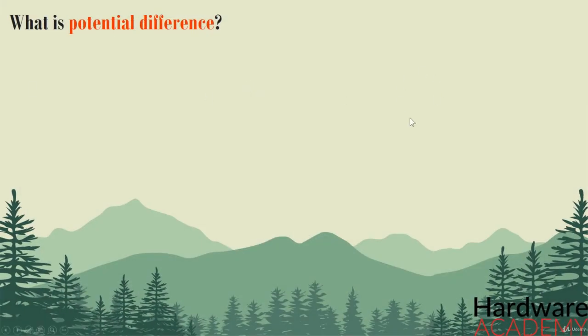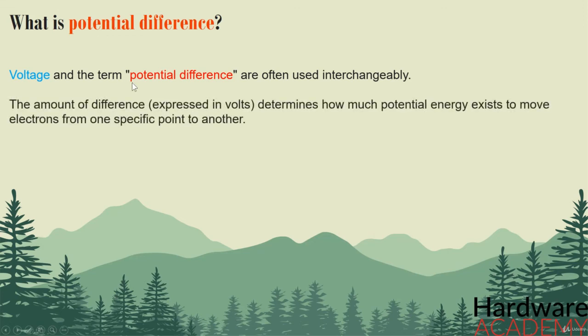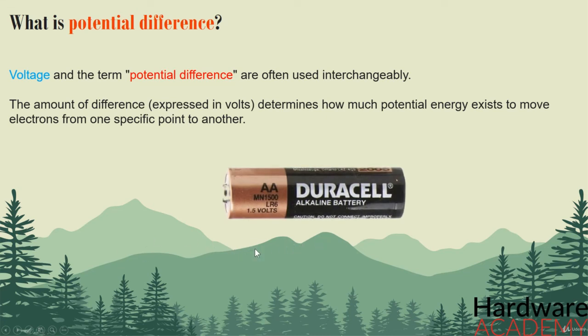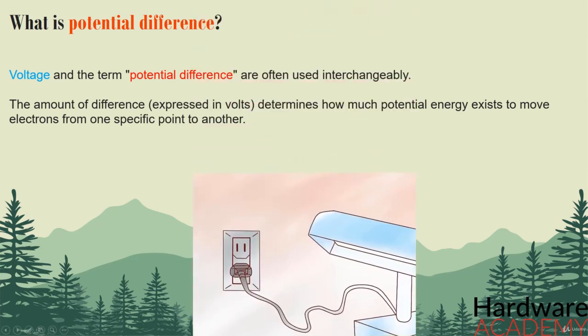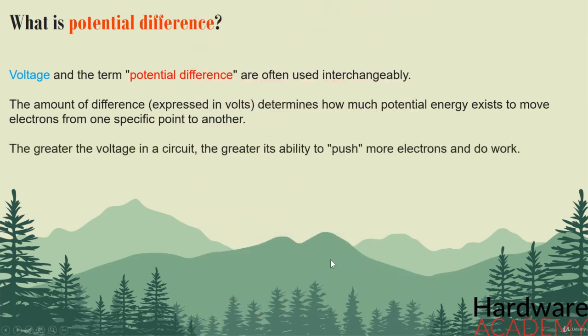You will hear almost all of the time that voltage is the potential difference between two points in a circuit. And that's 100% true because the amount of difference which is expressed in volts determines how much potential energy exists to move electrons from one specific point to another. The quantity identifies how much work potentially can be done through the circuit. So a household AA alkaline battery for example offers 1.5 volts. Typical household electric outlets offer 120 volts. So the greater the voltage in a circuit, the greater its ability to push more electrons and do work.